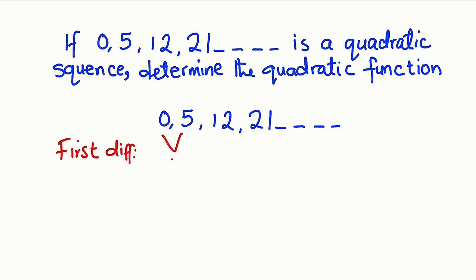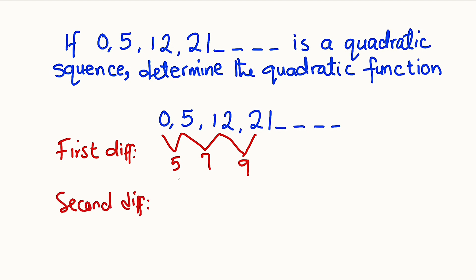Here is the sequence. First difference: from 0 to 5 we add 5, from 5 to 12 we add 7, from 12 to 21 we add 9. Second difference: from 5 to 7 we add 2, from 7 to 9 we add 2. We have a constant common difference of 2, therefore this sequence is quadratic.